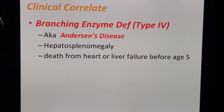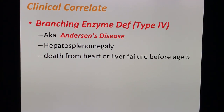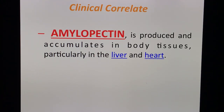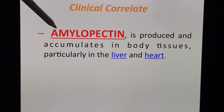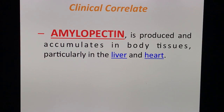Here's a misplaced slide adding more to Anderson's disease, which is type 4. Patients also present with hepatosplenomegaly and usually die before the age of 5 from heart or liver failure. There are actually two glycogen storage diseases that can present with heart failure: Cori's disease and Anderson's disease. This is mentioned in Harper's — the accumulation of amylopectin, particularly in the liver and heart, hence the liver failure and heart failure.